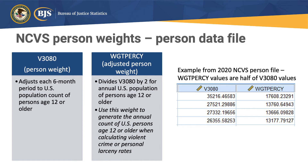The process is similar for the NCVS person weights included on the person data file. The original weight on the file, V3080, adjusts each six-month period to a U.S. population count of persons ages 12 or older. In order to not double that when combining to make an annual file, we adjust that weight by dividing it in half. The resulting weight is weight PERCY — weight PER for person, then collection year. We use this weight to generate the annual count of U.S. persons ages 12 or older when calculating violent crime or personal larceny rates. In the 2020 NCVS person file, row 4 shows V3080 with a value of 26355, and dividing that in half gives 13177 for weight PERCY.